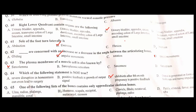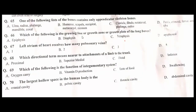One of the following lists contains only appendicular skeleton bones: clavicle, scapula, metatarsal, phalanges, radius. C is the correct option. Which of the following is the growth plate of the long bone? C is the correct option. The left atrium of the heart receives how many pulmonary veins? Four. D is the correct option.